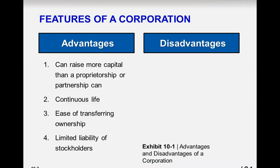Some of the advantages are we can raise more capital more quickly than in a proprietorship or partnership. It has a continuous life — in a partnership, if one partner dies, the business is dissolved as it was previously known, though someone can start it up again. It's easy to transfer ownership — you can just sell shares of the company instead of having to sell all the assets together. And there's limited liability for the stockholders, meaning the amount you can lose is just the amount you have invested.